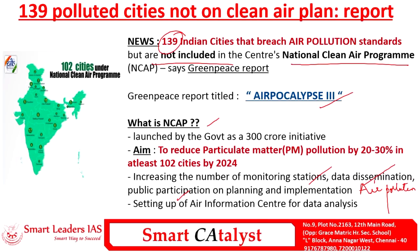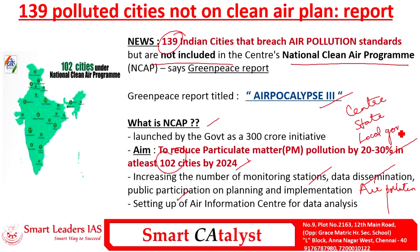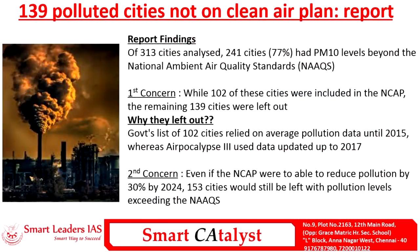The most important governance innovation in NCAP is that it involves functioning of all three levels of governance — center, state, and local governments — and also has space for citizen participation. The Apocalypse Report analyzed around 313 Indian cities and found 241 cities, almost 77% of the total, recorded more than allowed levels of PM10 pollution. Of those 241 cities, only 102 have been taken under consideration for NCAP; the other 139 are left out because the government considered data only up to 2015, whereas the report used data up to 2017.